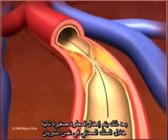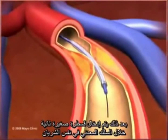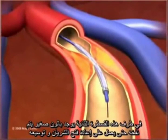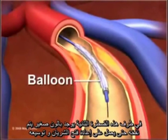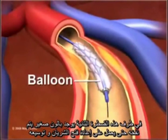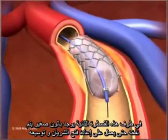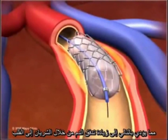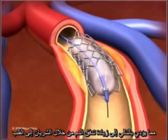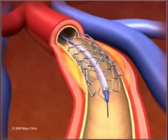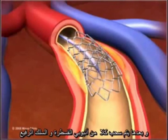A second, smaller catheter is then inserted over the wire and threaded to the same artery. When it reaches the narrowed area, a small balloon on its tip is inflated to reopen the artery and flatten the blockage into the artery wall, while at the same time stretching the artery open to increase blood flow to the heart. Both catheters and the wire are then withdrawn.